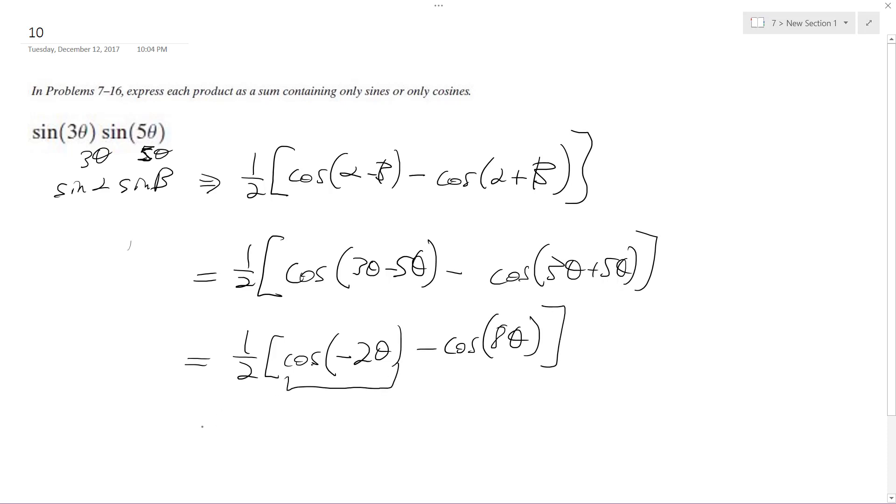And cosine is an even function, so this is the equivalent of just 2 theta, so you can get rid of that.